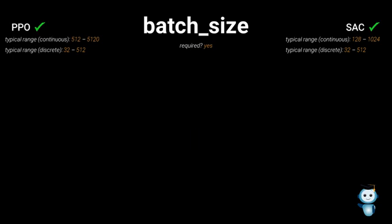Let's look at the ranges and recommendations. Ranges differ for continuous and discrete action spaces. I'd say stay in those ranges, and if training is unstable, think about adjusting the value closer to the upper bound of the range to improve training stability at the cost of slower learning. That's it for the batch size.